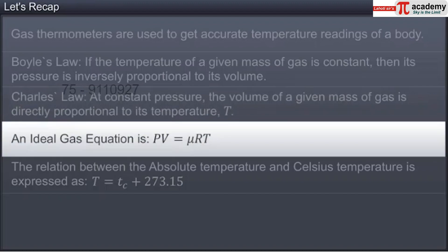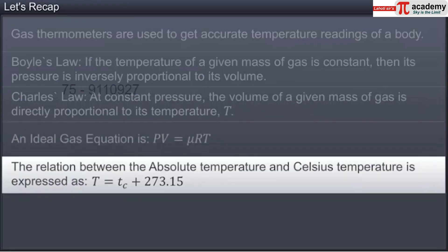An ideal gas equation is PV equals to mu R T. The relation between the absolute temperature and Celsius temperature is expressed as T equals to Tc plus 273.15. Thank you.